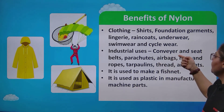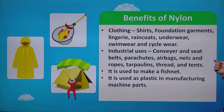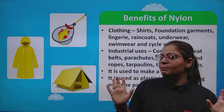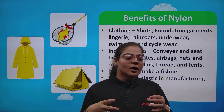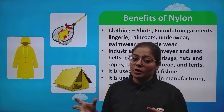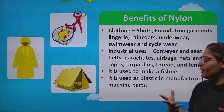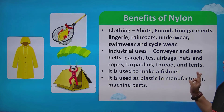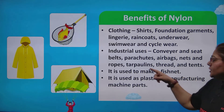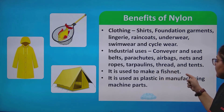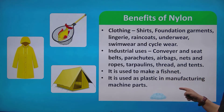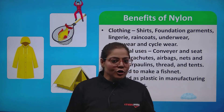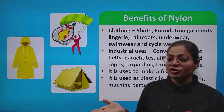For industrial uses: conveyors and seat belts, parachutes, airbags, nets, ropes, trampolines, thread, and tents. When you read all these applications, you realize that elasticity and strength are needed in all of them — and those are exactly the properties nylon has. It is also used to make fishnets and as a plastic substitute in manufacturing machine parts. These are wonderful examples and wonderful applications of nylon.